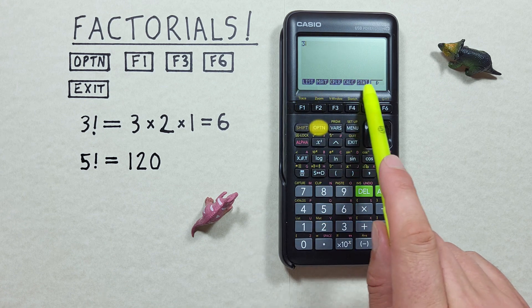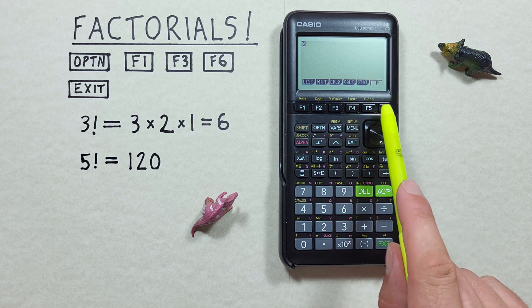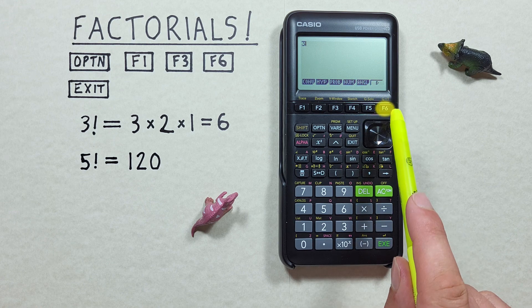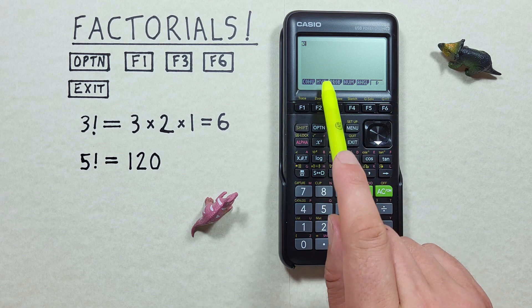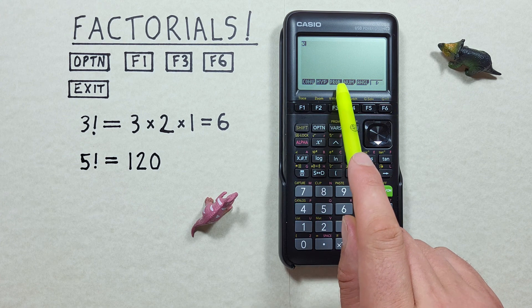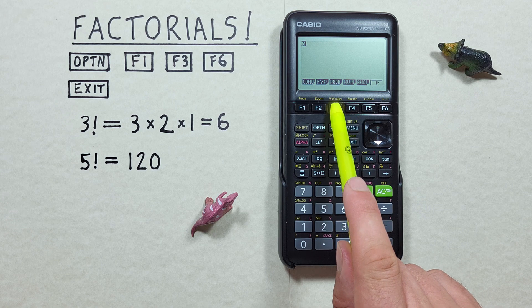That'll bring us to this menu here and we want to press F6 to go to the next menu. Now we want to choose the third option here, the probability menu. To do that we press the F3.